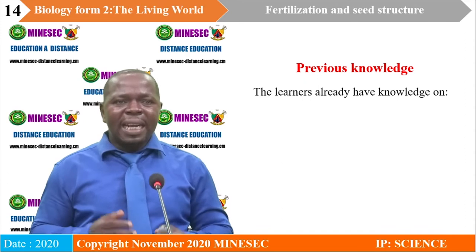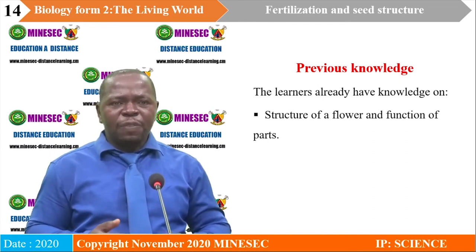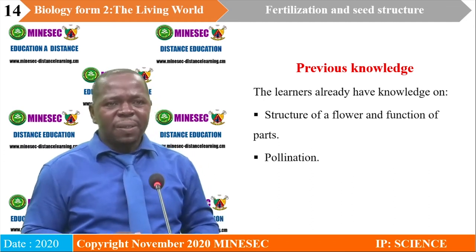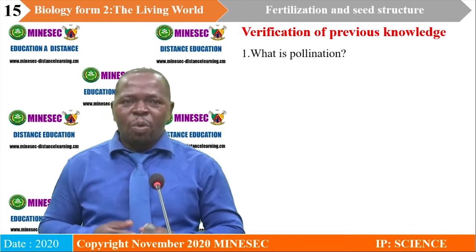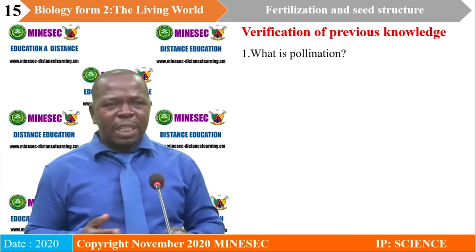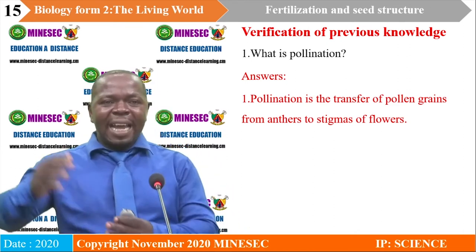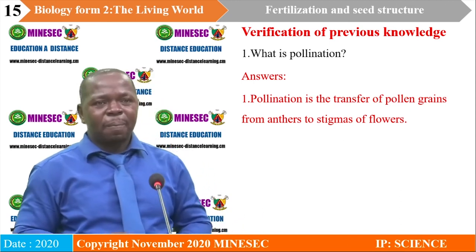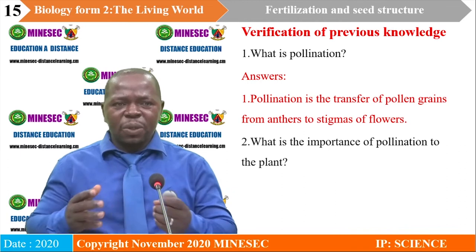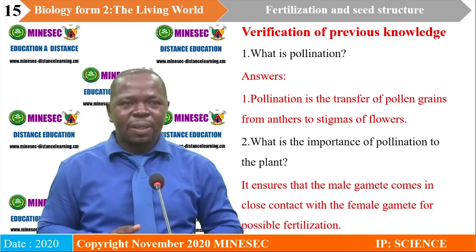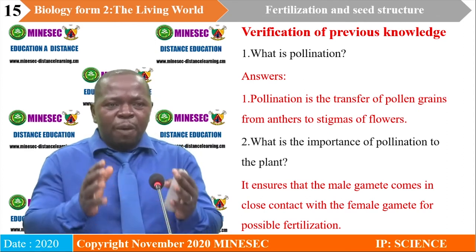The learners already have knowledge on the structure and functions of a flower and pollination. Let us verify our previous knowledge. What is pollination? Pollination is the transfer of pollen grains from the anthers to the stigmas of flowers. What is the importance of pollination to the plant? Pollination ensures that the male gamete comes in close contact with the female gamete for possible fertilization.